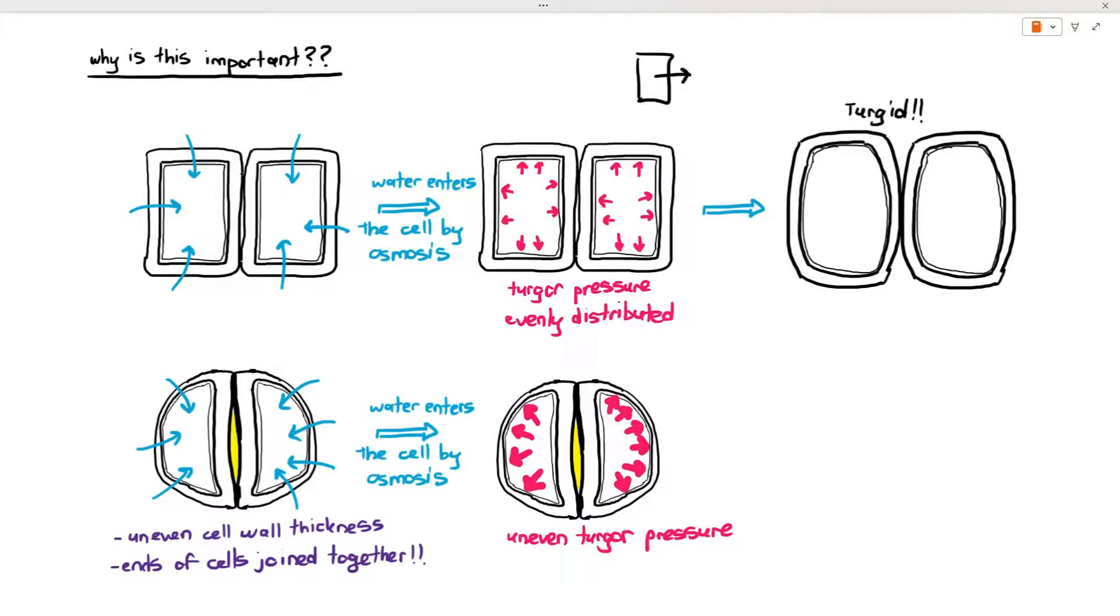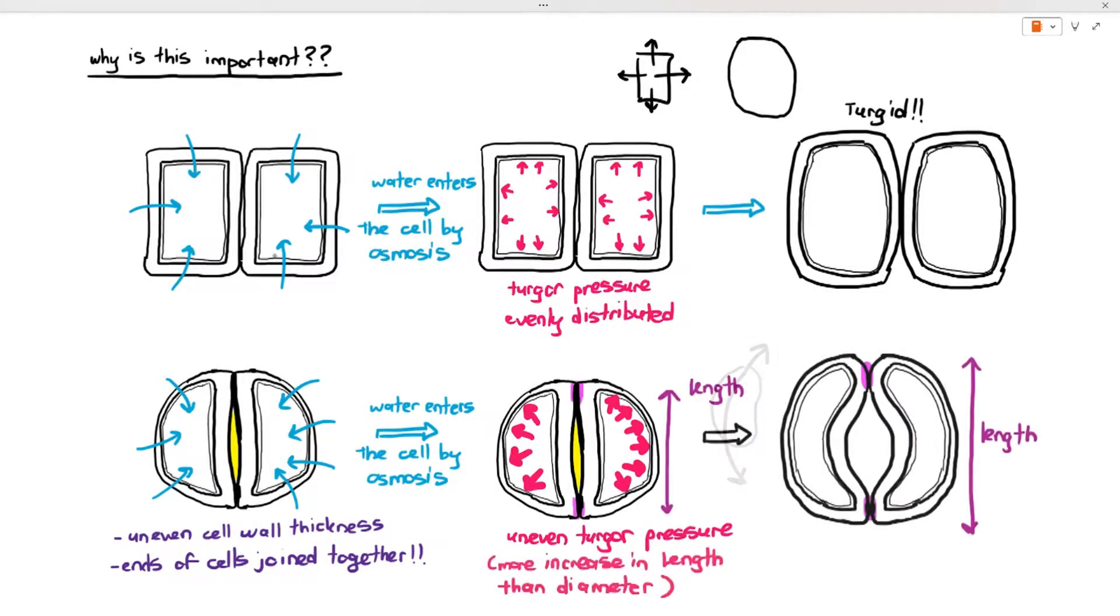So in this situation the guard cells will not expand evenly like the cells at the top. In fact there will be more increase in their length than their diameter. What I mean by that is as you can see, look at the guard cells, the guard cells have actually expanded, and when the guard cells expand in this situation there is more increase in the length as I have represented.